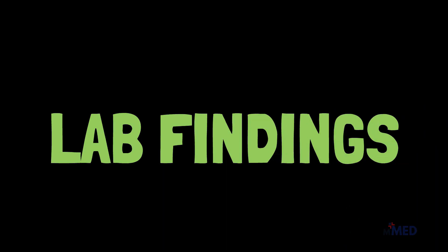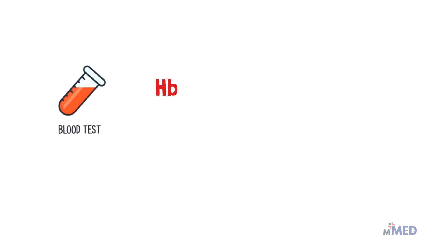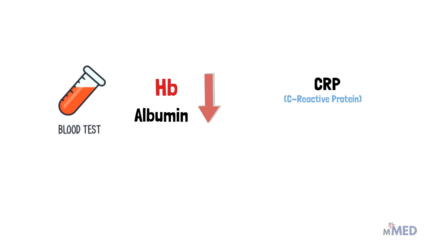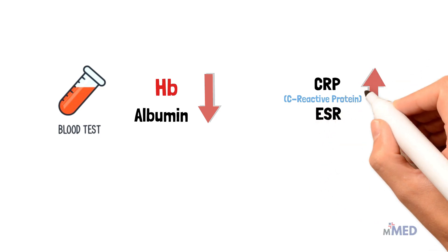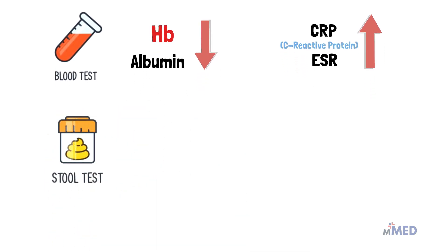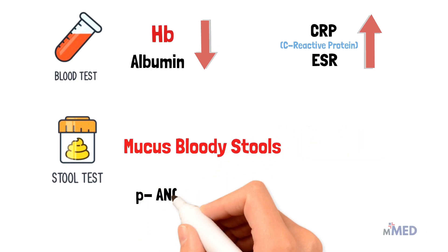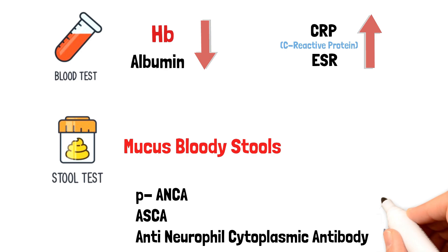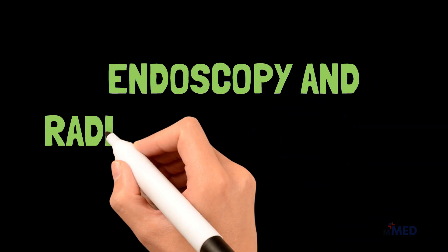In the lab findings of ulcerative colitis, a blood test will show low hemoglobin due to blood loss with stools, and low albumin because the colon cannot properly digest proteins. CRP and ESR will be elevated, indicating inflammation. A stool specimen can show mucus and bloody stools. The patient may also be positive for pANCA (perinuclear antineutrophil cytoplasmic antibodies) and ASCA (anti-Saccharomyces cerevisiae antibodies), the latter often present in ulcerative colitis.